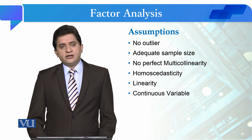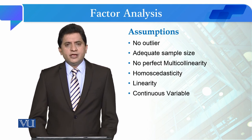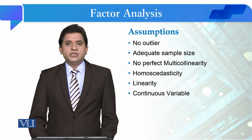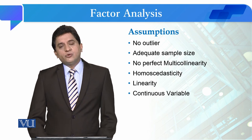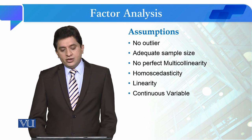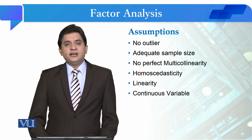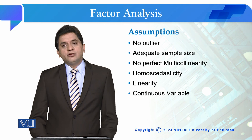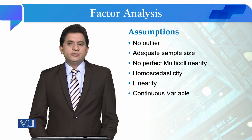Regarding sample size for factor analysis, around 300 to 350 is considered appropriate. Multicollinearity should not be perfect — items should have correlation with each other, as stronger correlations between items are ideal for keeping them in the same scale, but absolute multicollinearity should be avoided, just as we studied in regression. Linearity should also be present — linear relationships should exist among all items.